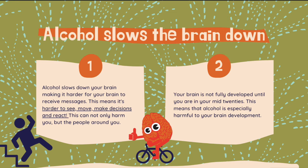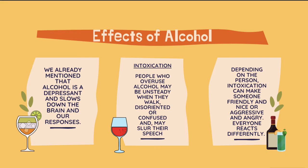Your brain is not fully developed until your mid-20s, so alcohol is especially bad for people whose brains are not yet fully developed. Alcohol slows down our brain and responses — reaction time and vision. Another effect is intoxication. People who overuse alcohol may stagger when they walk, lose their balance or coordination, slur their speech, or be confused and disoriented. Depending on the person, intoxication can vary — sometimes it makes people very friendly and talkative, or very aggressive and angry.